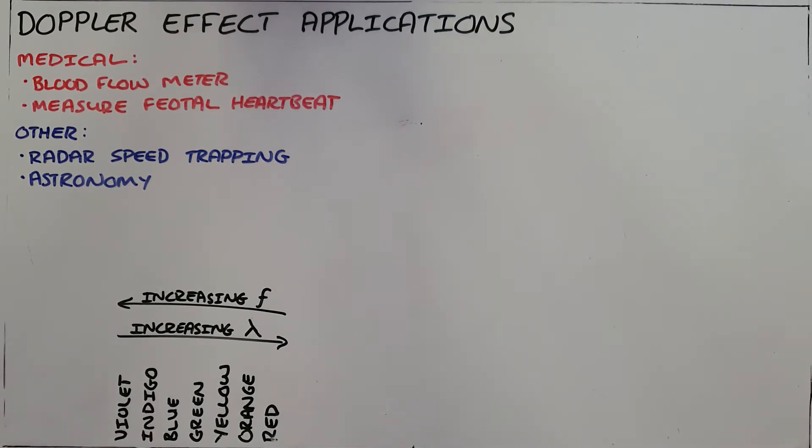The more common one is astronomy where we will often talk about red shifts and blue shifts. Now we know that the color spectrum is arranged violet, indigo, blue, green, yellow, orange, red and we say that's in order of increasing wavelength or decreasing frequency, basically saying that violet light has the shortest wavelength and red light has the greatest wavelength.